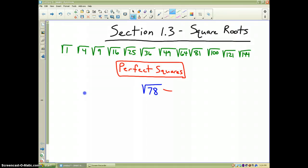The square root of 78 lies between the square root of 64 and the square root of 81. The square root of 64 is equal to 8. The square root of 81 is equal to 9. It must lie somewhere in between.